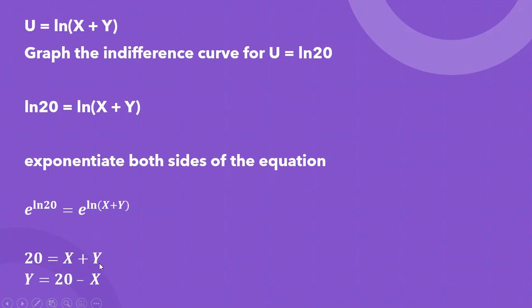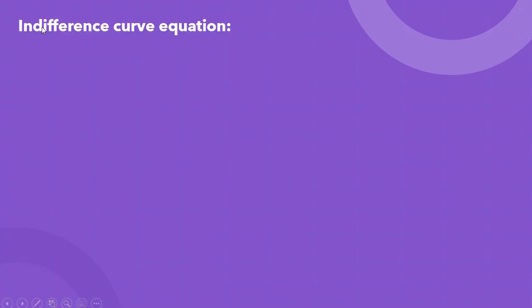If we solve this equation for y, y equals 20 minus x, and that will be the equation for the indifference curve. So again, the indifference curve equation is y equals 20 minus x.